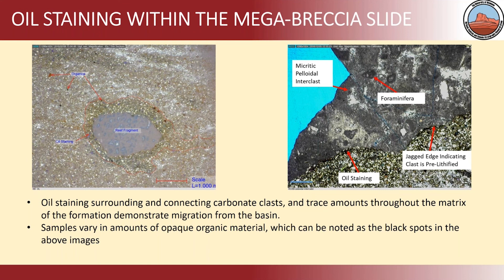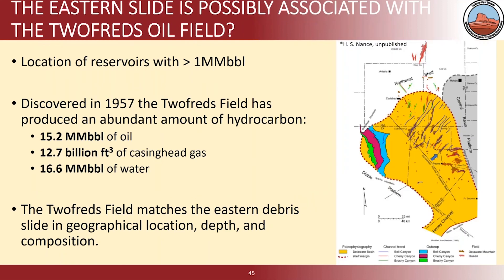I must tell you something about the oil. What we find is that there is an oil field that corresponds exactly to where the isopach of the tsunami deposit is. It's called the Two Freds field. It has a modest 15 million barrels. And it matches our eastern debris slide.